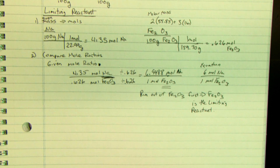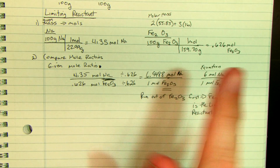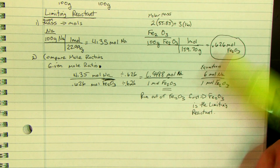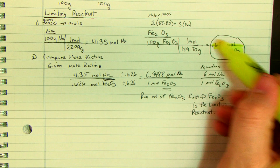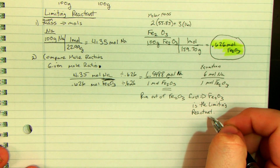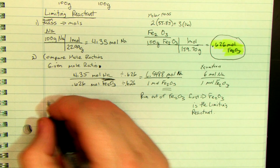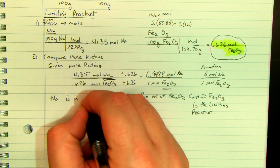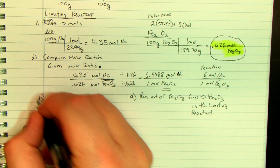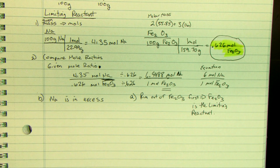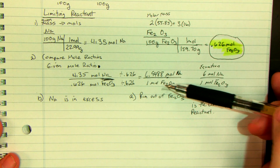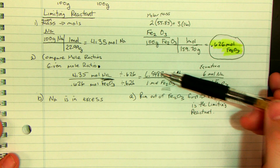Going back, the 0.626 moles of Fe2O3 is going to be super important because that's how much I'm going to have. Since Fe2O3 is the limiting reactant, sodium is in excess. This answers parts A and B — sodium is in excess, and the limiting reactant is iron 2 oxide, because once I run out of Fe2O3, I have more sodium left over.